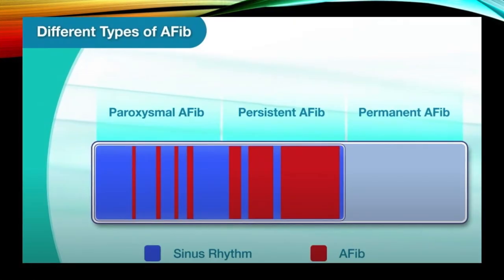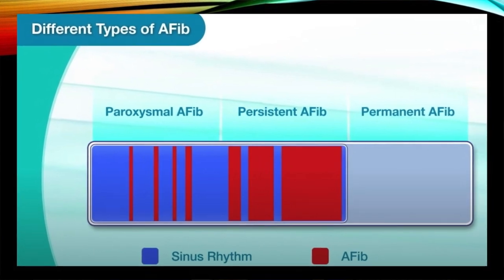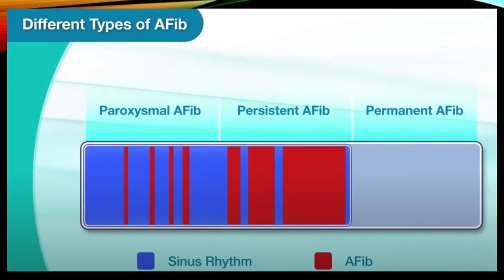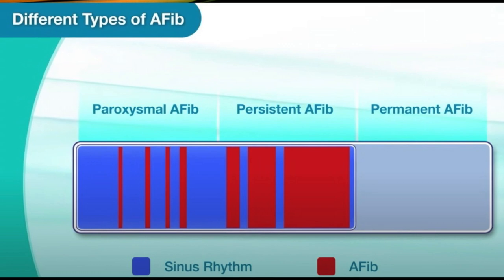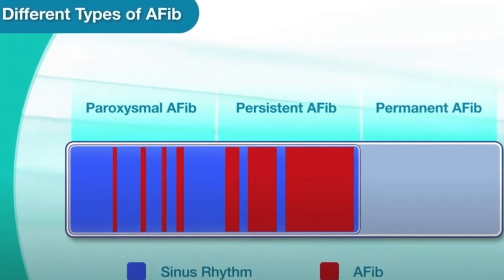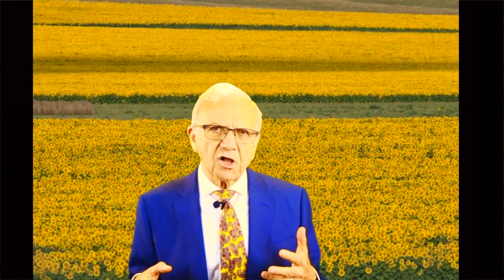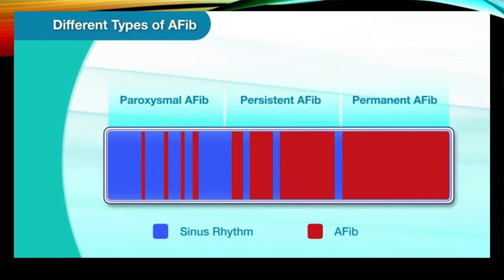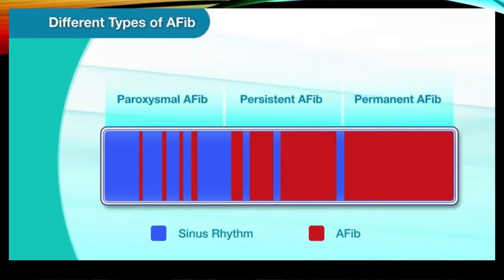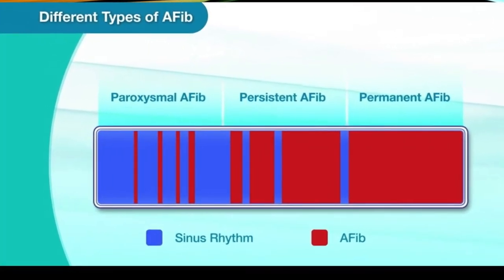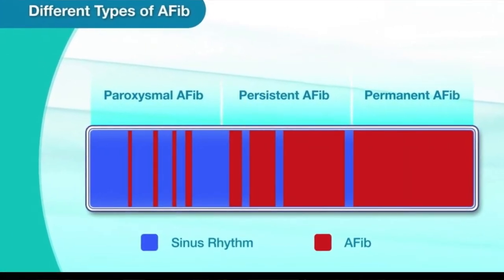Persistent atrial fibrillation lasts more than seven days and does not stop spontaneously — it will require a chemical or electrical cardioversion, where we deliver a small shock across the chest to get you back to beating normally. Permanent atrial fibrillation, also called chronic atrial fibrillation, is when the decision has been made by you and your physician to leave you in atrial fibrillation forever.